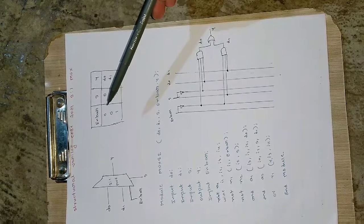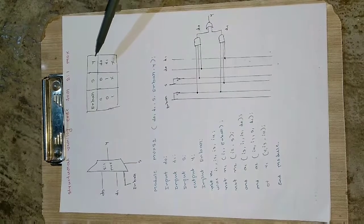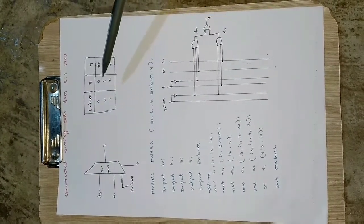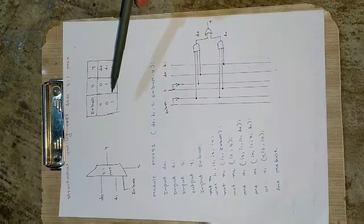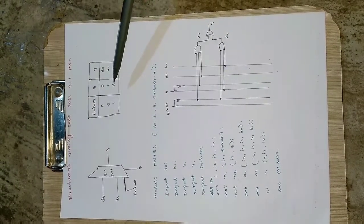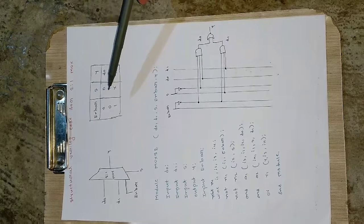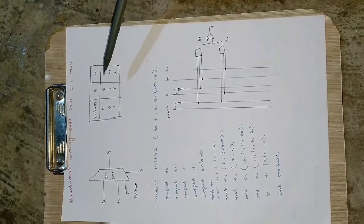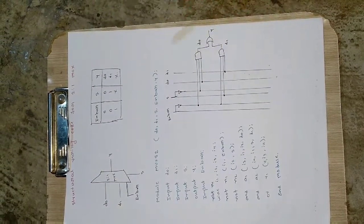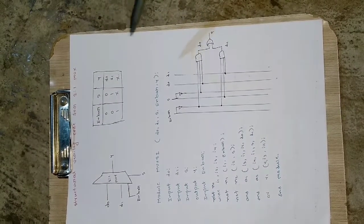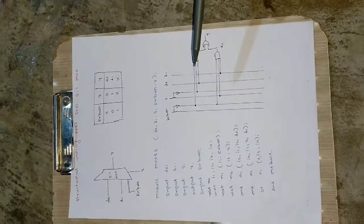Coming to the truth table: we have enable bar, s, and y. If enable bar is 0 and s is 0, the output will be d0. If enable bar is 0 and s is 1, the output will be d1. If enable bar is 1, then regardless of s — which is undetermined — the output will be 0. I wrote 'undetermined' because if there is a previous value, the output could be something other than 0.